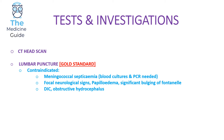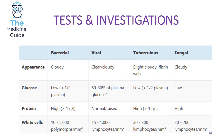Let's look at the CSF findings in more detail. You need to be aware of the findings for different causes of meningitis: bacterial, fungal, viral, and tuberculosis (Mycobacterium tuberculosis). The CSF will present differently in each scenario. In an SBA, you might be given CSF findings following a lumbar puncture and be expected to identify whether the underlying infection is bacterial, viral, TB, or fungal — so you need to be very comfortable with this.